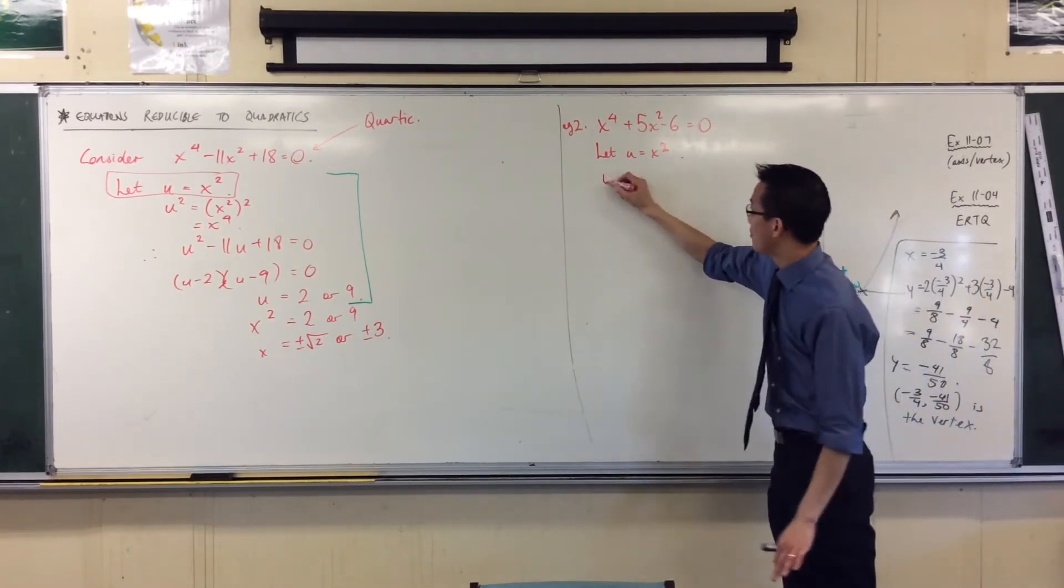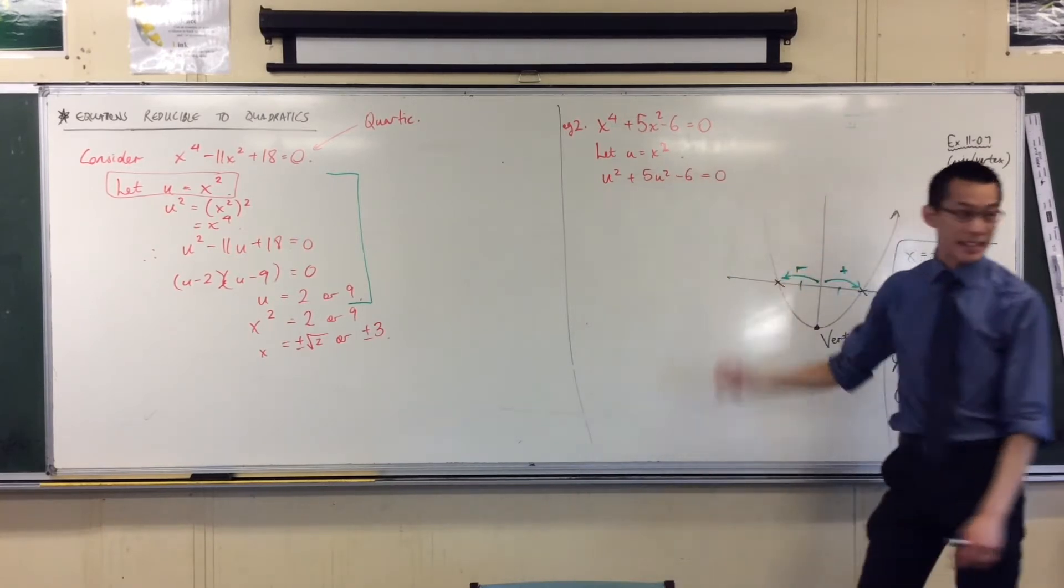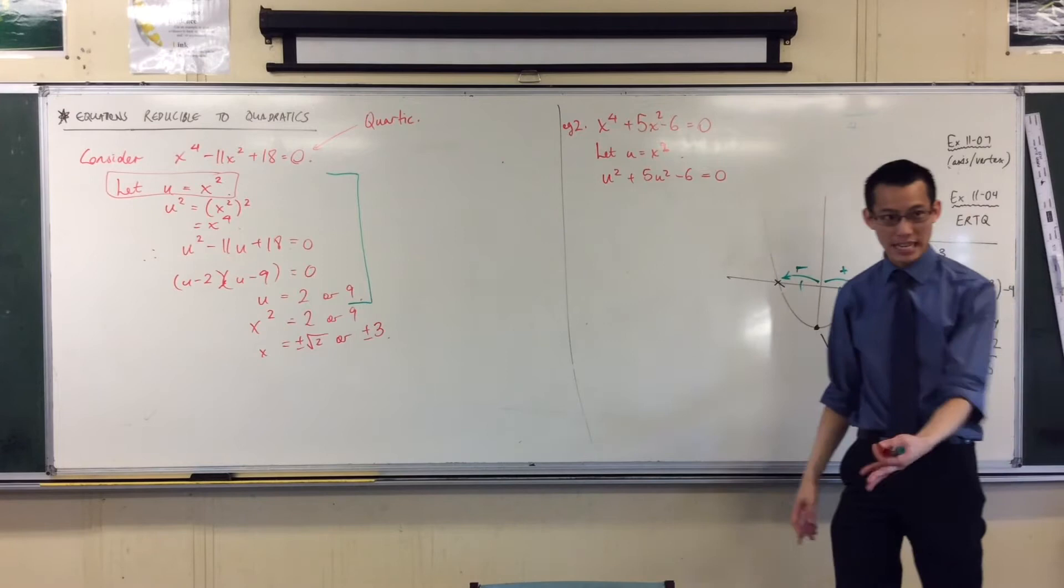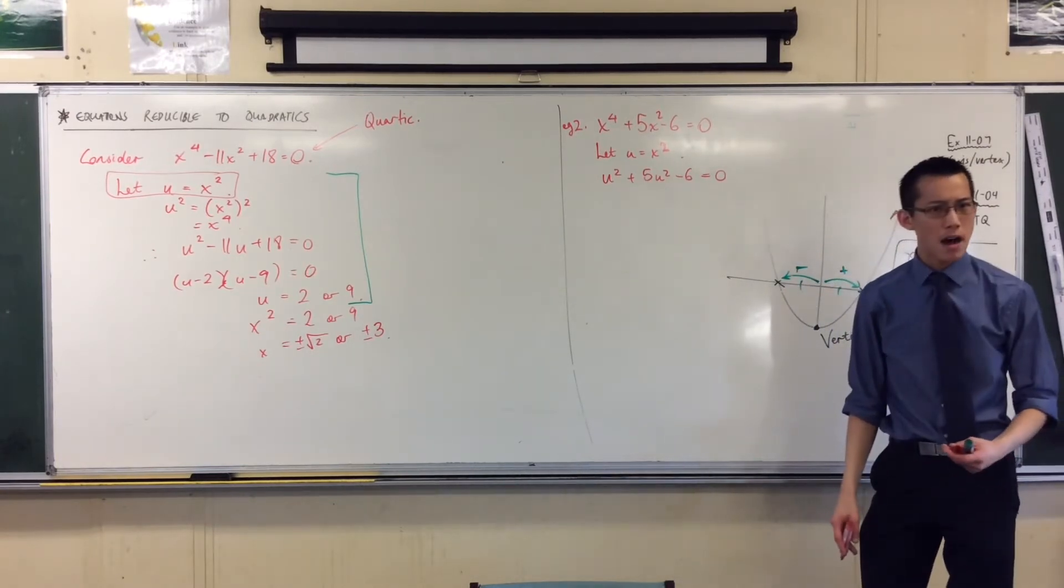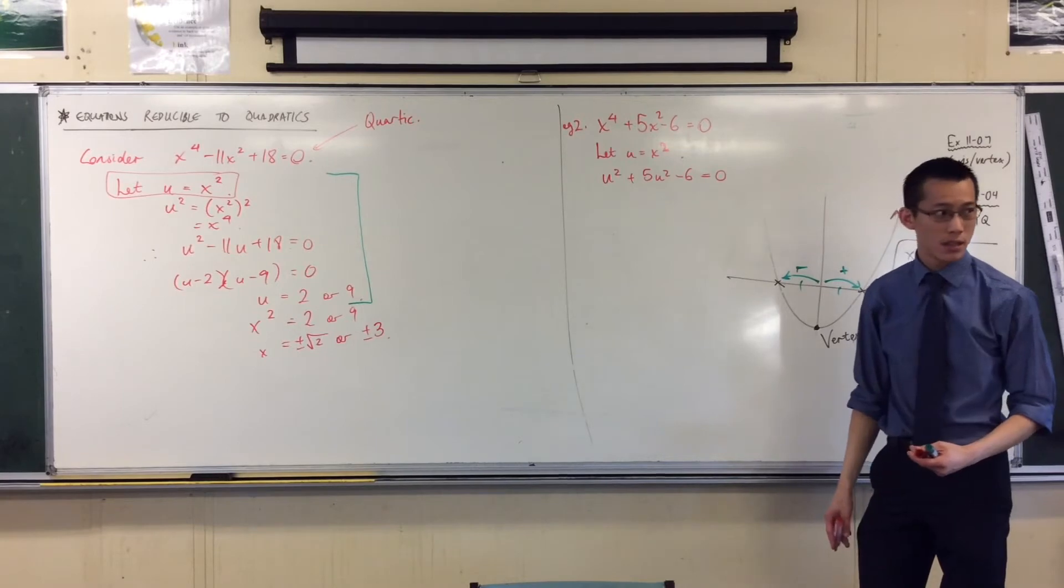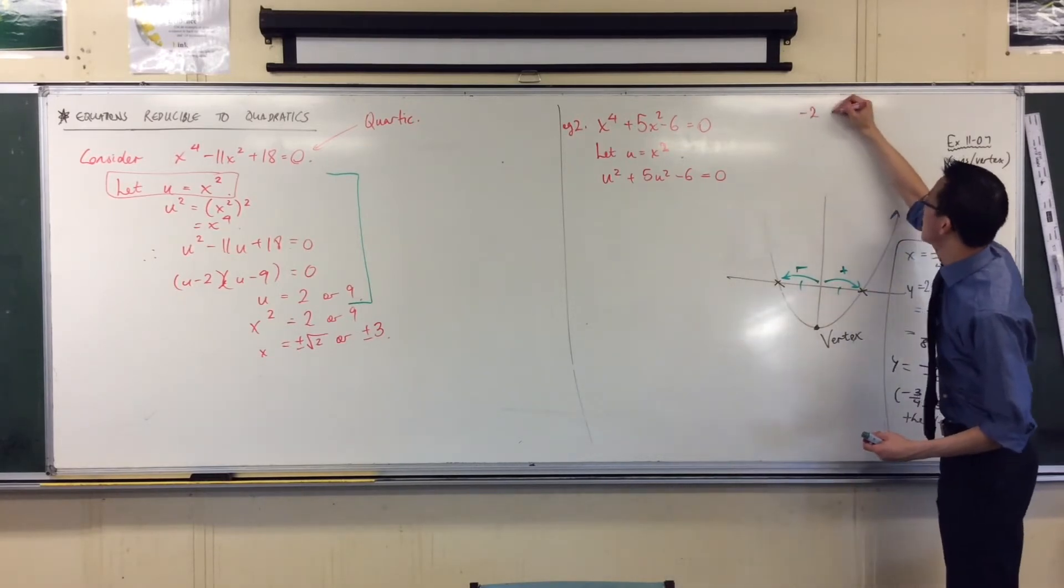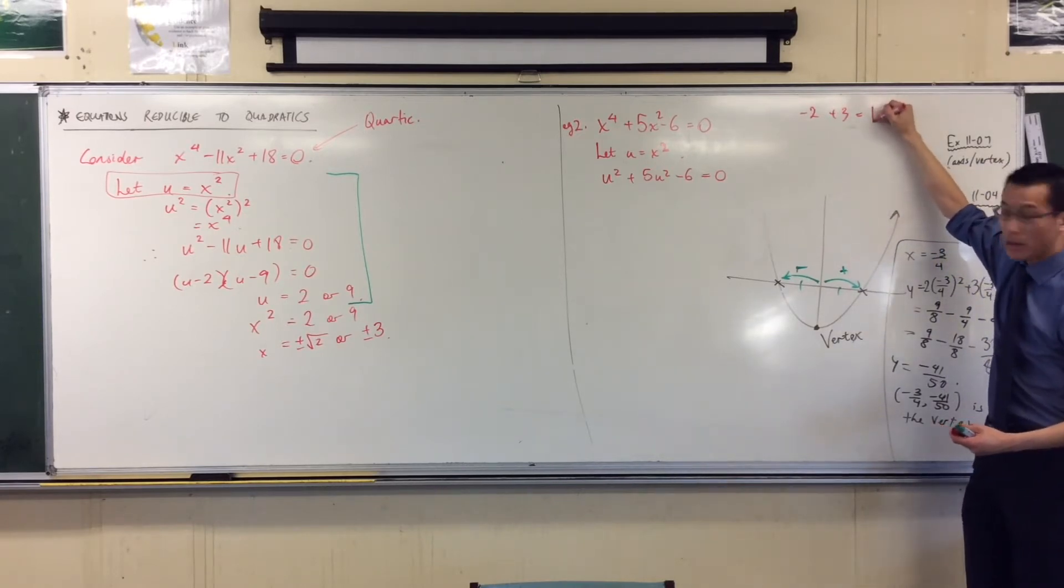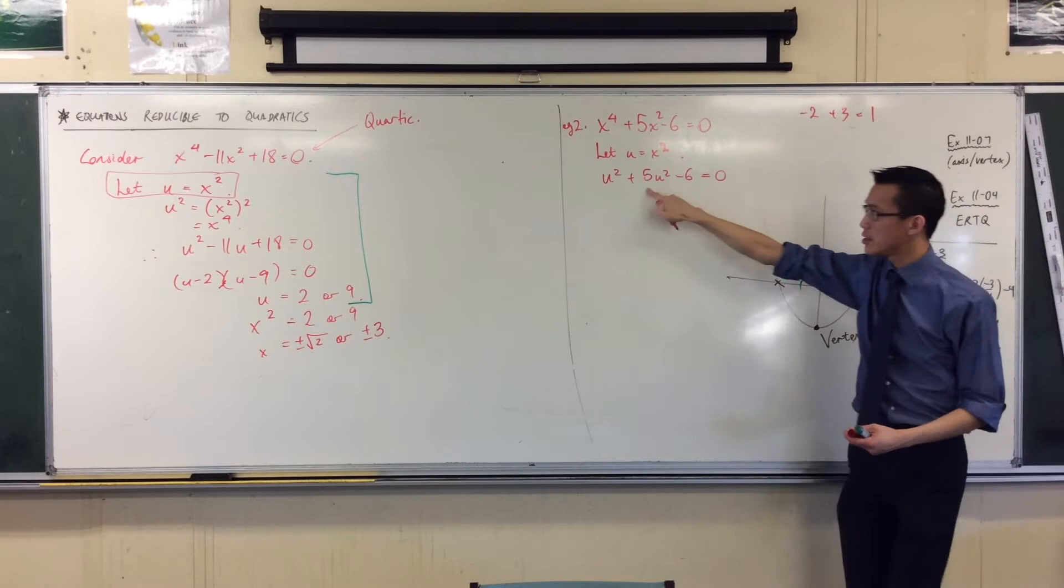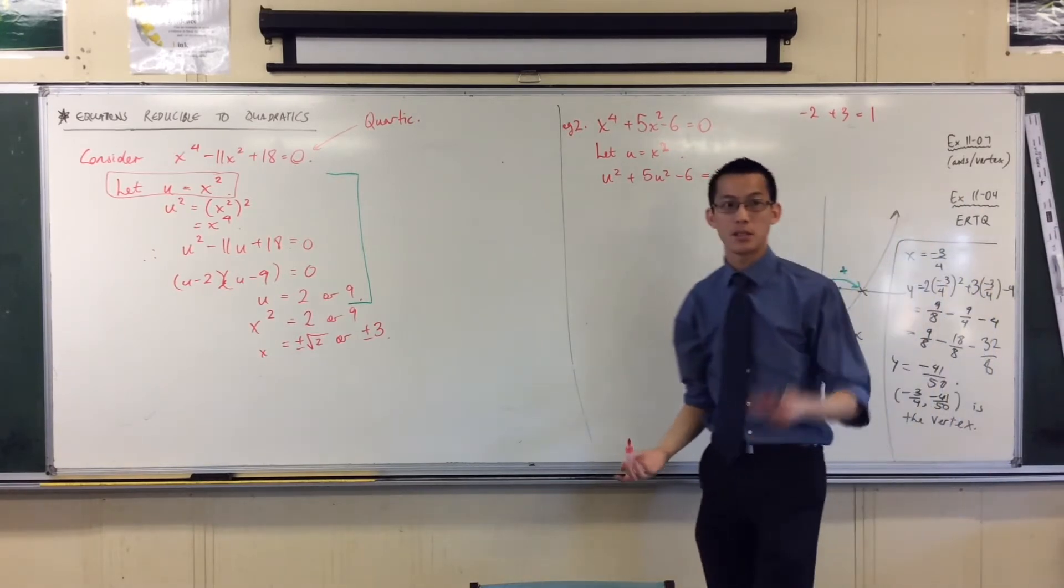So I'm going to write my new equation in here. Again, it's one I've chosen which is easy to factorize. What's the pair of numbers I'm after? Minus 2 positive 3. Will that work for me? When I do minus 2 plus 3, that's going to give me 1, which is supposed to be this number in here. So it's not quite matching up. I need a different pair of factors.